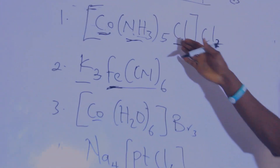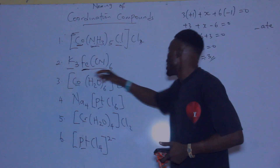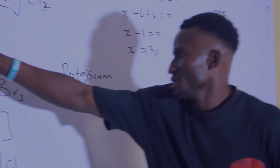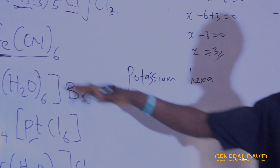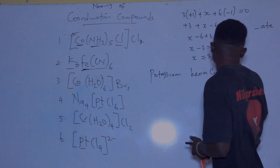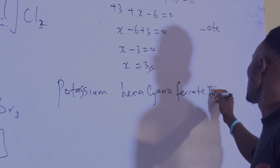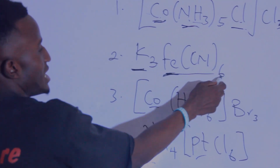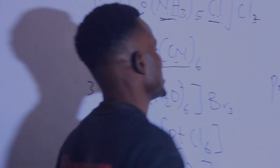Starting the name: potassium comes first. There are six cyanide ligands, so that is hexa. The ligand is cyano, and the central atom on the anion side is ferrate. The oxidation number of iron is three. So the full name is potassium hexacyanoferrate(III).